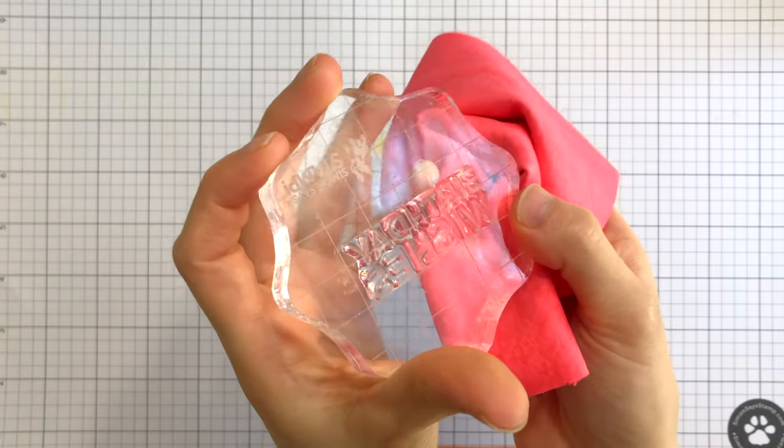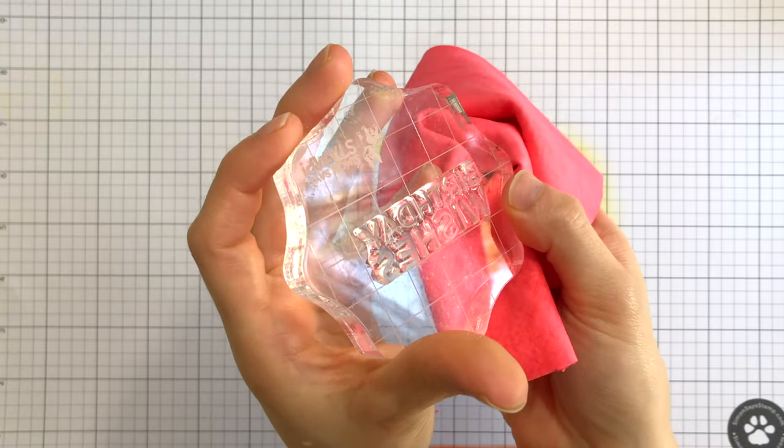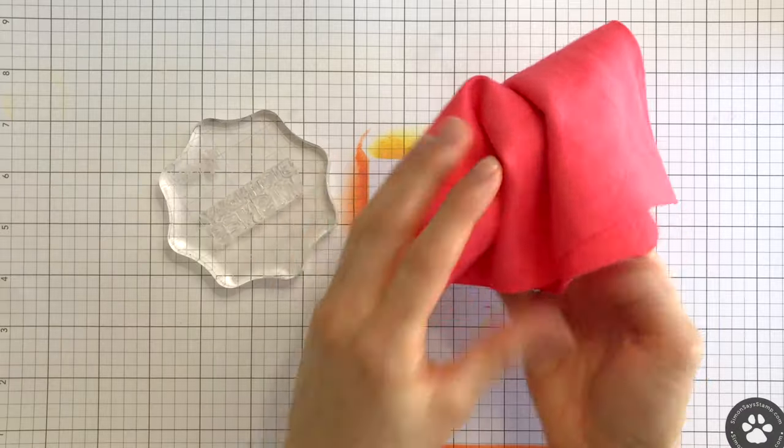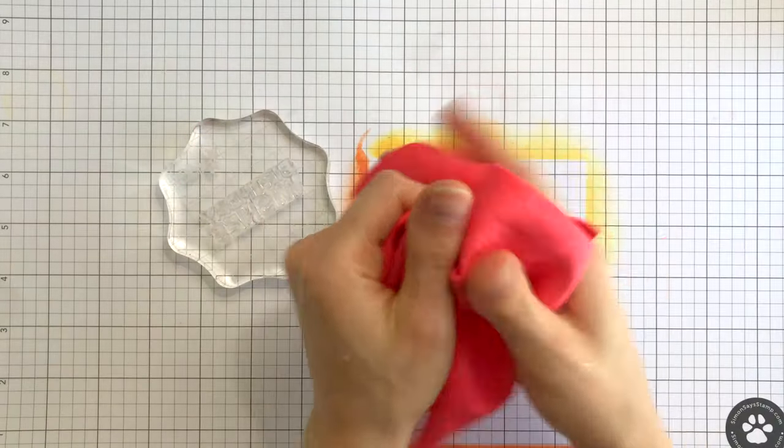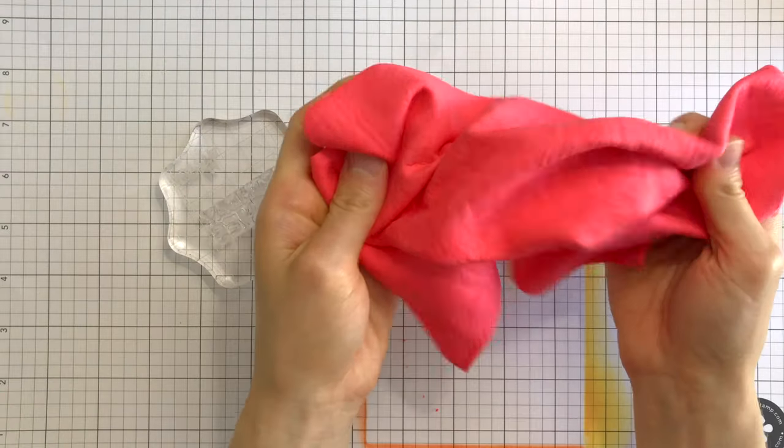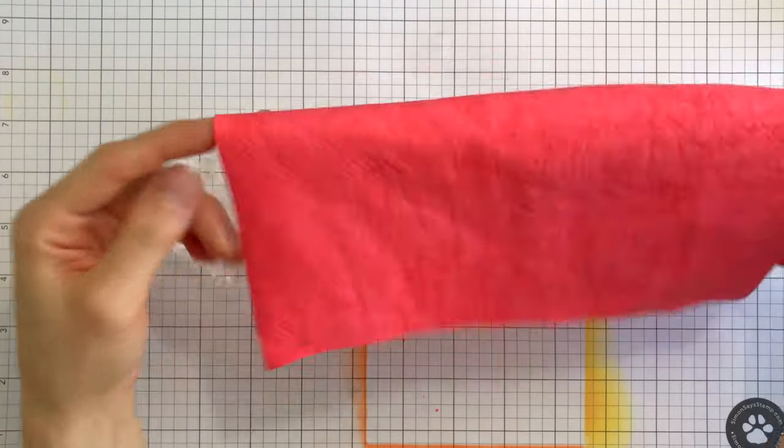When you're done crafting for the day, let your stamp chamois dry in the open air to keep it from having an odor. Most inks will eventually start to stain your chamois, but it will still work perfectly, even when a rainbow of other colors begin to build up on its surface.